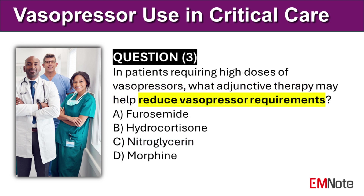Question number 3: In patients requiring high doses of vasopressors, what adjunctive therapy may help reduce vasopressor requirements? The correct answer is B. In patients requiring high doses of vasopressors, corticosteroids such as hydrocortisone may help reduce vasopressor requirements.